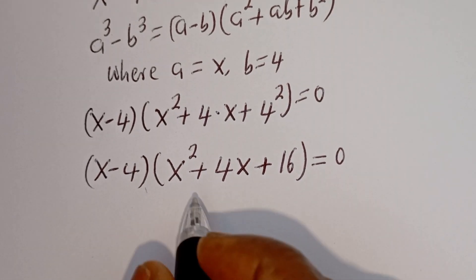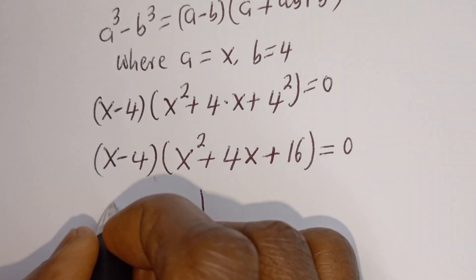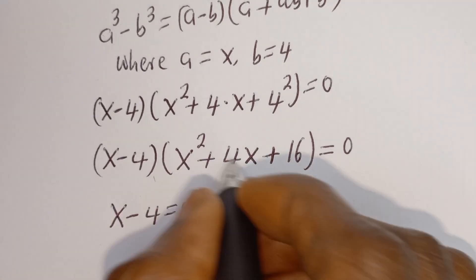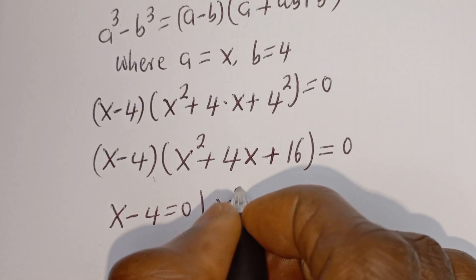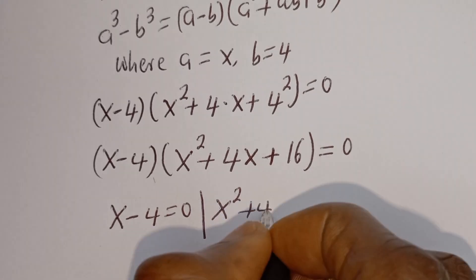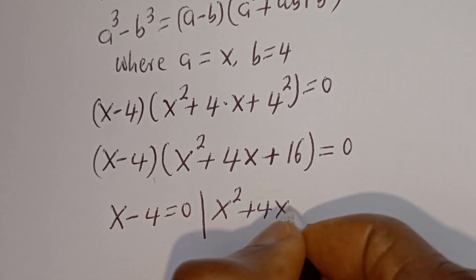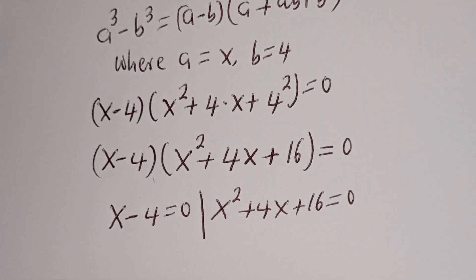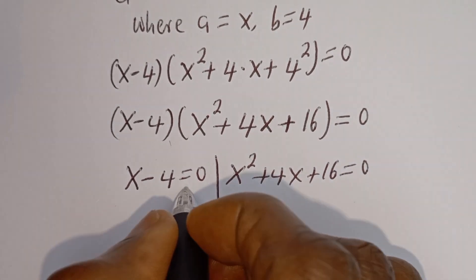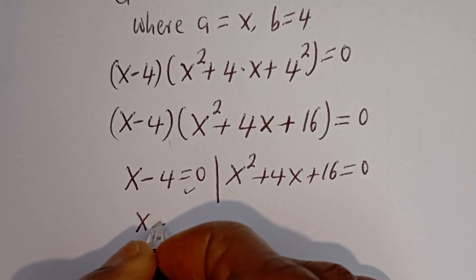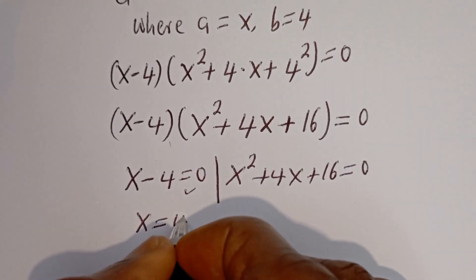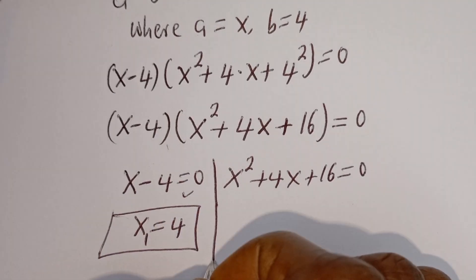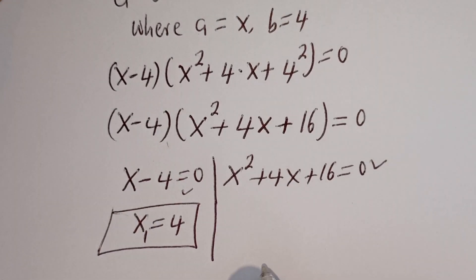Now there are two cases. The first case is s minus 4 is equal to 0, and the second case is s squared plus 4s plus 16 is equal to 0. From the first case, s is equal to 4. This is the first value of s — let's call this s1. From the second case, this is a quadratic equation.